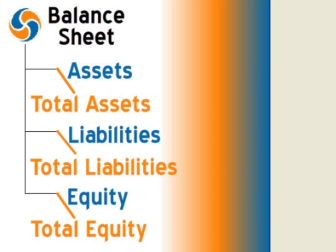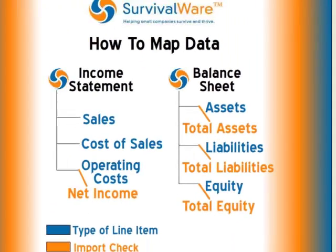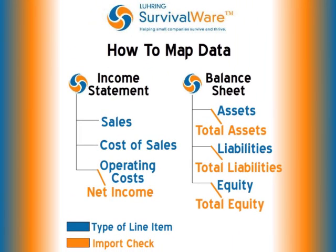At the end of each one of those Balance Sheet categories is an Import Check: Total Assets, Total Liabilities, and Total Equity. Here's one more look at the How to Map Data Map — I hope this assists you in conceptualizing the mapping data process.